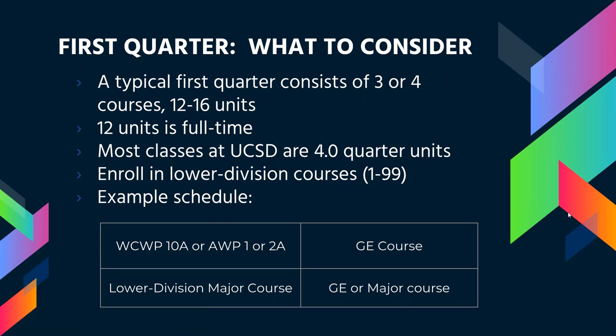You can also review your final exam schedule on TritonLink, which will be separate from your discussion and lecture times. For your first quarter, we recommend that you take three or four classes, which will be about 12 to 16 units. Twelve units is considered full-time. Most of your courses at UCSD will be four quarter units. We also recommend taking lower division courses for fall quarter — those are courses numbered 1 to 99. An example schedule might include an academic writing course (WCWP 10A or AWP 1/2A), a lower division major course, and one or two GE courses.